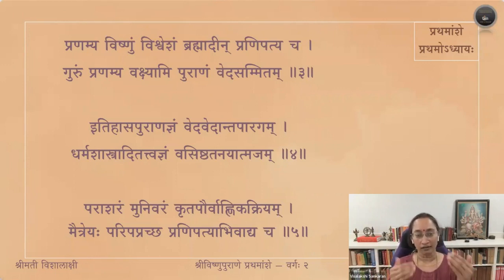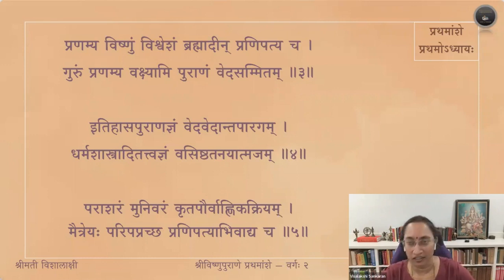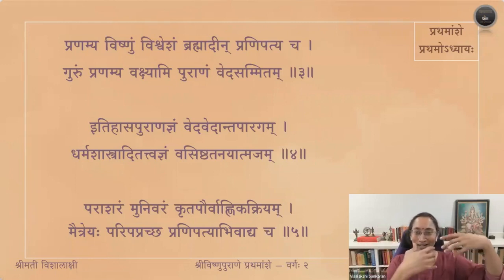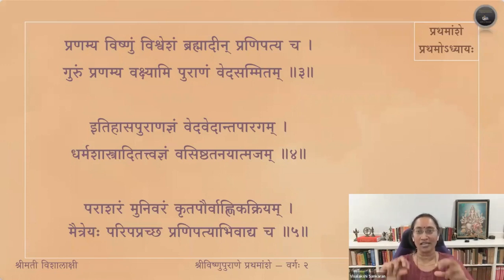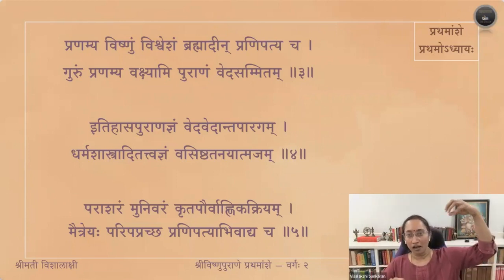First he did Deva Namaskaram, then Brahmadhin Purvajana Namaskritya, then Guru Namaskaram. Then Maitreya asks his question to Parashara. In Puranam, there is something like a conversation tree — who said to whom. It starts with Maitreya asking Parashara, then Parashara Uvacha. Inside that conversation, he will say this person said to that person. You will have to keep track of the moola conversation tree to understand who said to whom.